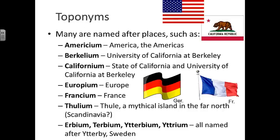Toponyms, on the other hand, are things that are named after places. There are a lot of elements named for places, because those places were famous, or where those elements were originally discovered. Americium is named for America. Berkelium is named for Berkeley, where the University of California is located. Californium for the state of California. Europium, Francium, those are obvious. Thulium is believed to be named for Thule, which was a mythical island in the far north. And Erbium, Terbium, Ytterbium, and Yttrium are all four named for the same place, Ytterby, Sweden.